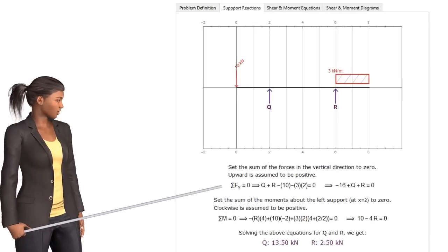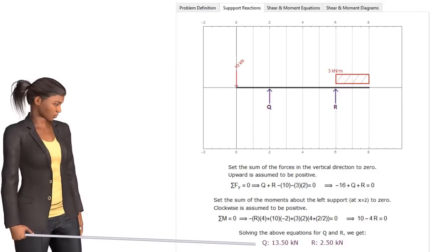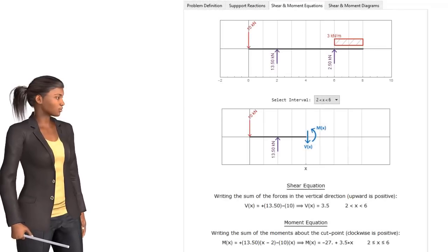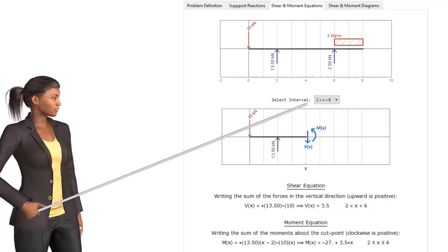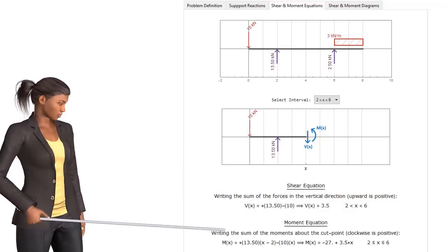The second tab takes us to the support reactions page. Here, we can verify our equilibrium equations formulation and check the resulting support reaction values. The third tab opens the shear and moment equations page. On this page, we can pick a beam segment from the drop-down menu to view its free body diagram and shear and moment equations.